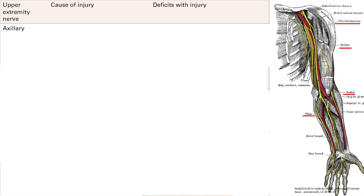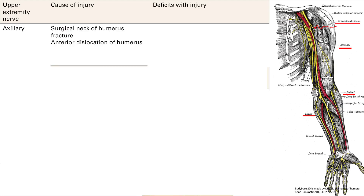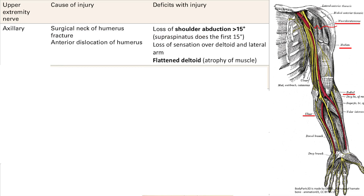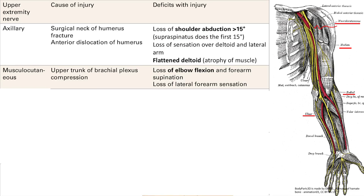That's pretty much it for the upper extremity nerves. Let's do a brief review. The cause of axillary nerve injury is either a fracture of the surgical neck of the humerus or an anterior dislocation of the humerus. The key deficit keyword is the deltoid: difficulty abducting the shoulder above 15 degrees, flattening of the shoulder, and loss of sensation over the deltoid and lateral arm. The musculocutaneous nerve is lower yield — injury is from upper trunk of the brachial plexus compression, causing loss of elbow flexion and forearm supination.